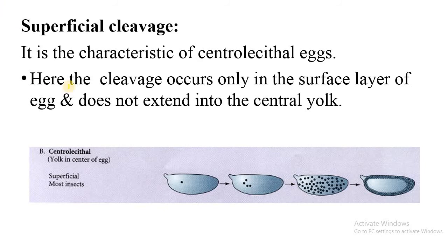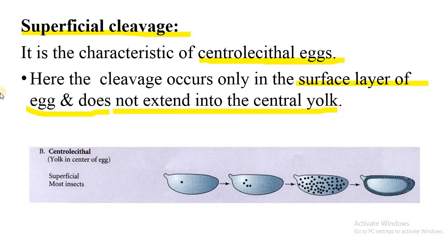Superficial cleavage is the characteristic of centrolecithal eggs. Here the cleavage occurs only in the surface layer of the egg and does not extend into the central yolk. The central yolk doesn't participate in cell division. First, the nucleus divides — karyokinesis occurs — but no cytoplasmic division occurs initially.